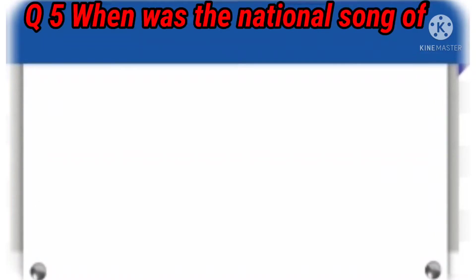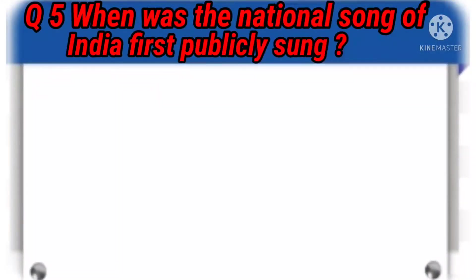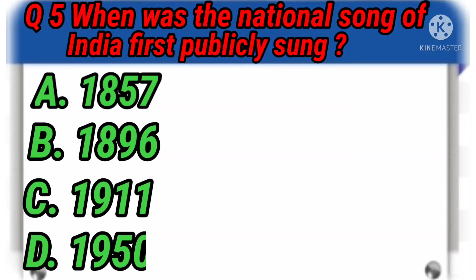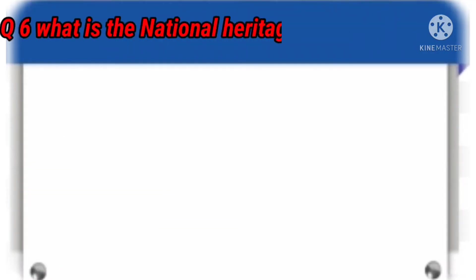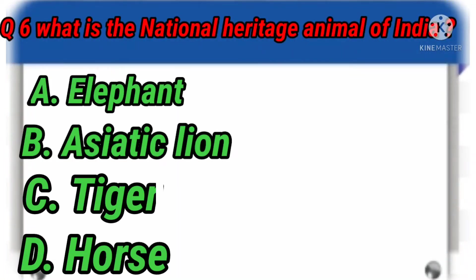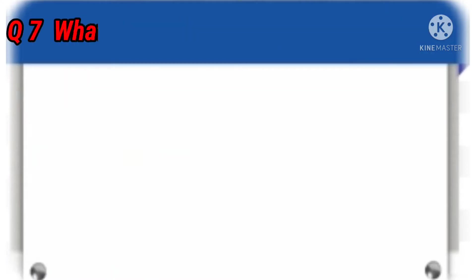Question number 5: When was the national song of India first publicly sung? The answer is 1896. Question number 6: What is the national heritage animal of India? The answer is Elephant.